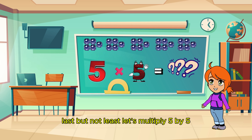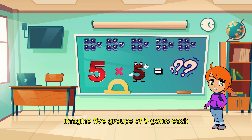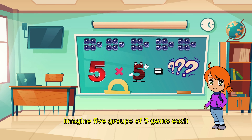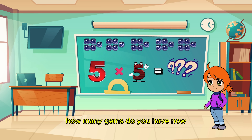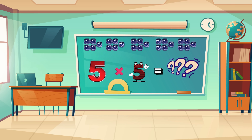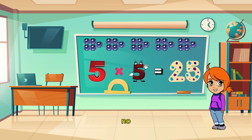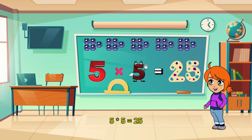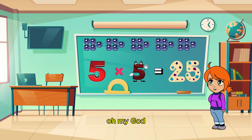Last but not least, let's multiply 5 by 5! Imagine 5 groups of 5 gems each. How many gems do you have now? Absolutely magical! 5 times 5 equals 25! Your collection is overflowing with 25 sparkling gems!